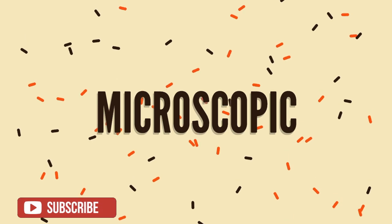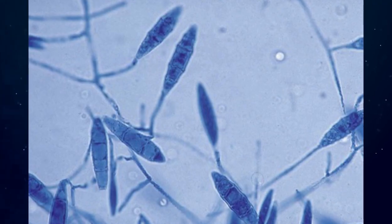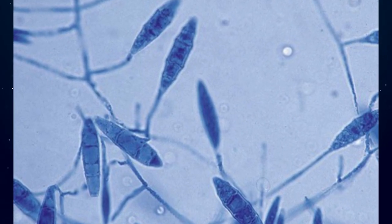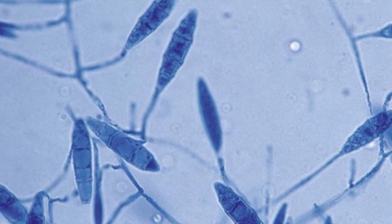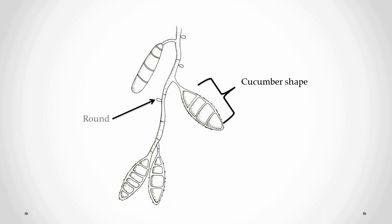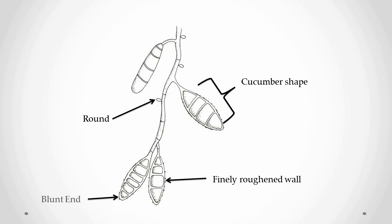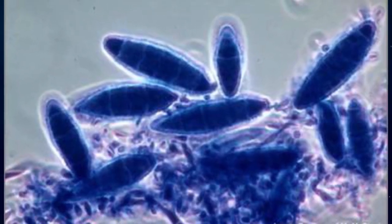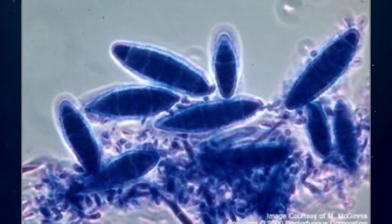Microscopic Characteristics: Hyphae are septate and hyaline. Macroconidia are present in enormous numbers, symmetrical, rough and relatively thin-walled, with no more than six compartments. The ends are rounded, not as pointed as in Microsporum canis. Microconidia are club-shaped and arranged along hyphae when they are present.